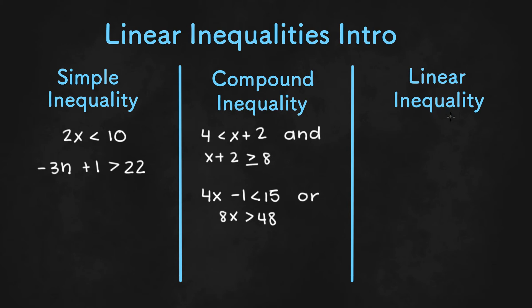Now linear inequalities are when we have two different variables and these can be graphed on a coordinate plane. So a linear inequality might be something like y is greater than or equal to 2x minus 3, or it could be something like x plus y is less than 4. There are two variables and we can graph these on the coordinate plane.